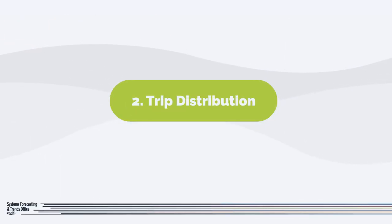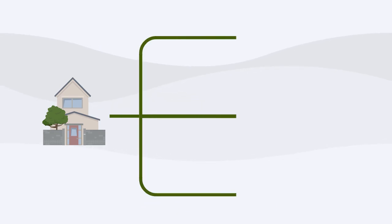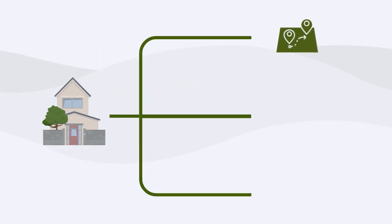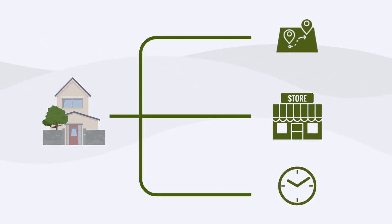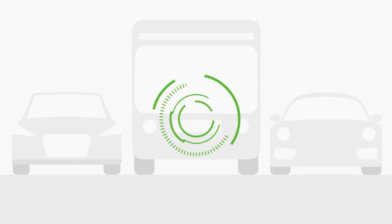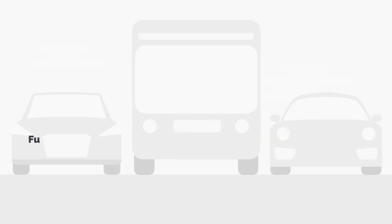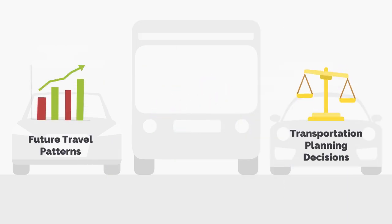The next step is trip distribution, which determines where trips will likely go based on factors like proximity, where people want to go, and travel time. It helps predict future travel patterns and aids transportation planning decisions.